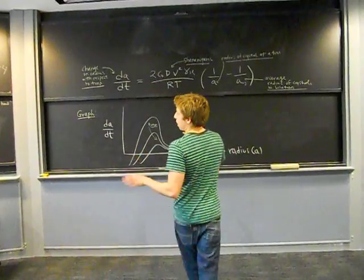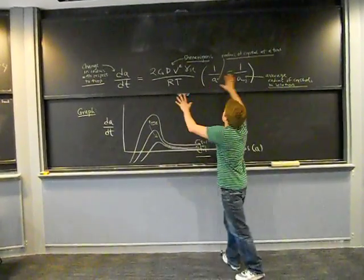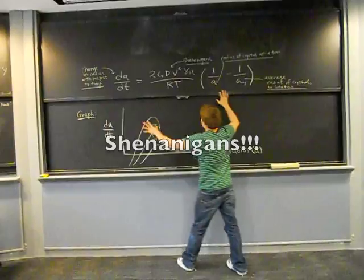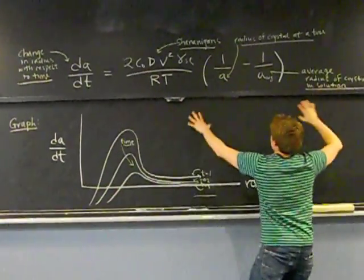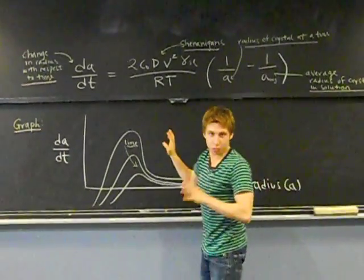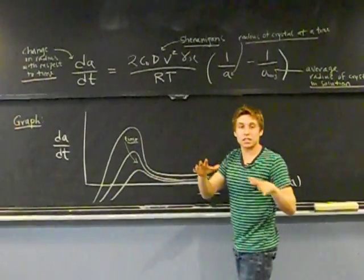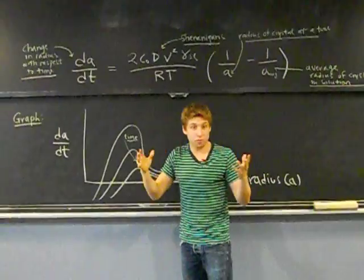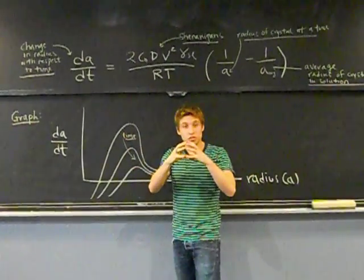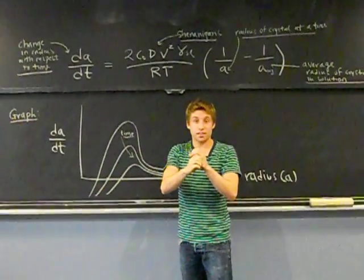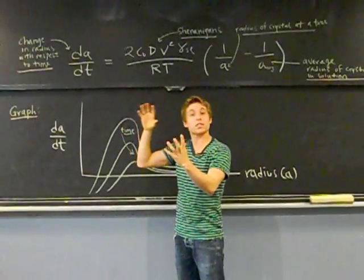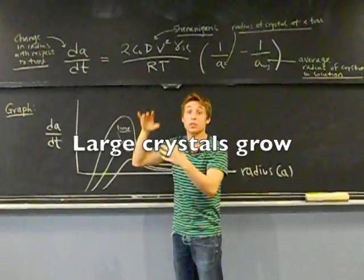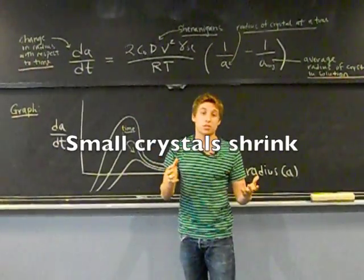So, Ostwald ripening is this equation. It's shenanigans, okay? You can see there's lots of variables, derivatives, average radius. But don't worry about that now. We'll understand that better later. But basically, Ostwald ripening is an observed phenomenon where smaller crystals in solution shrink and disappear, and their atoms diffuse in solution and redeposit themselves on larger crystals. So the larger crystals grow, and the smaller crystals shrink.